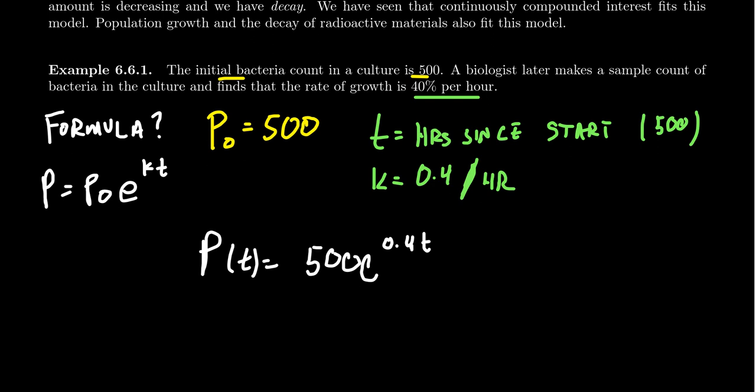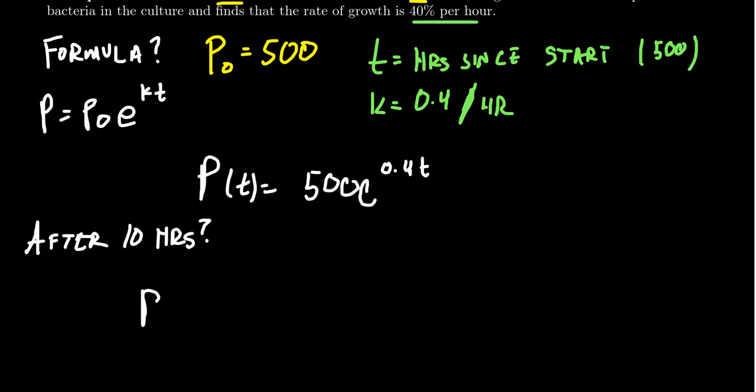We could ask questions like, what is the estimated amount after 10 hours? After 10 hours, how many bacteria should we expect to have? Essentially what we're trying to do is compute P of 10. We're trying to figure out 10 hours would mean that t equals 10. So we would take 500 times e to the 0.4 times 10, which is 500e to the 4th.